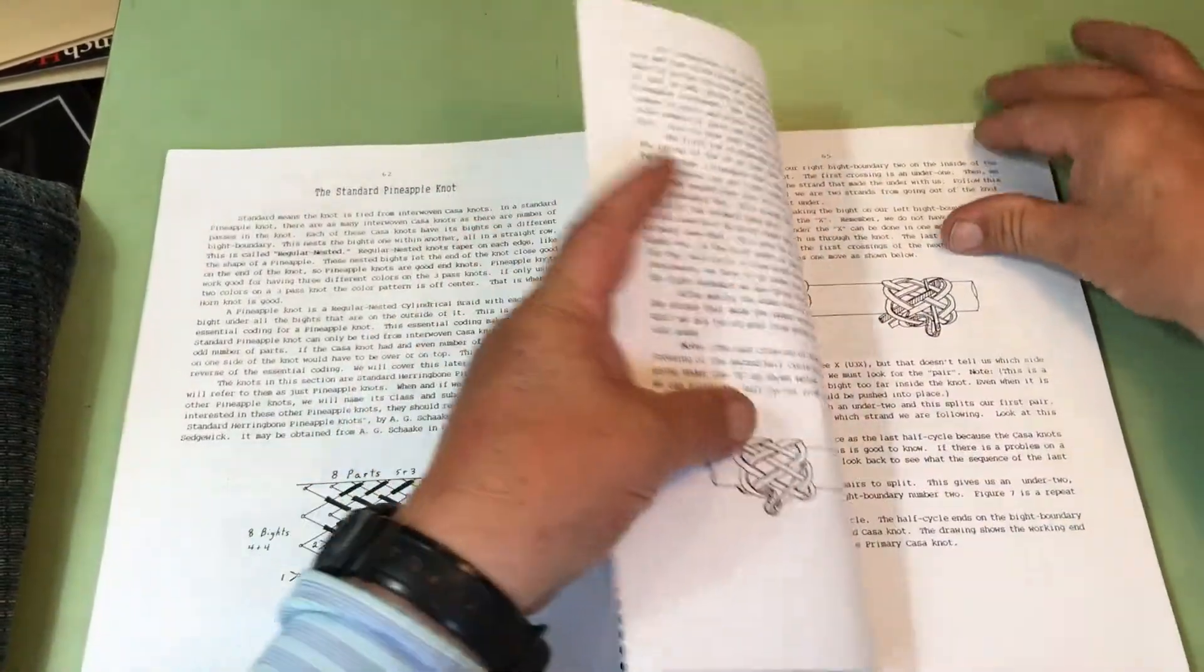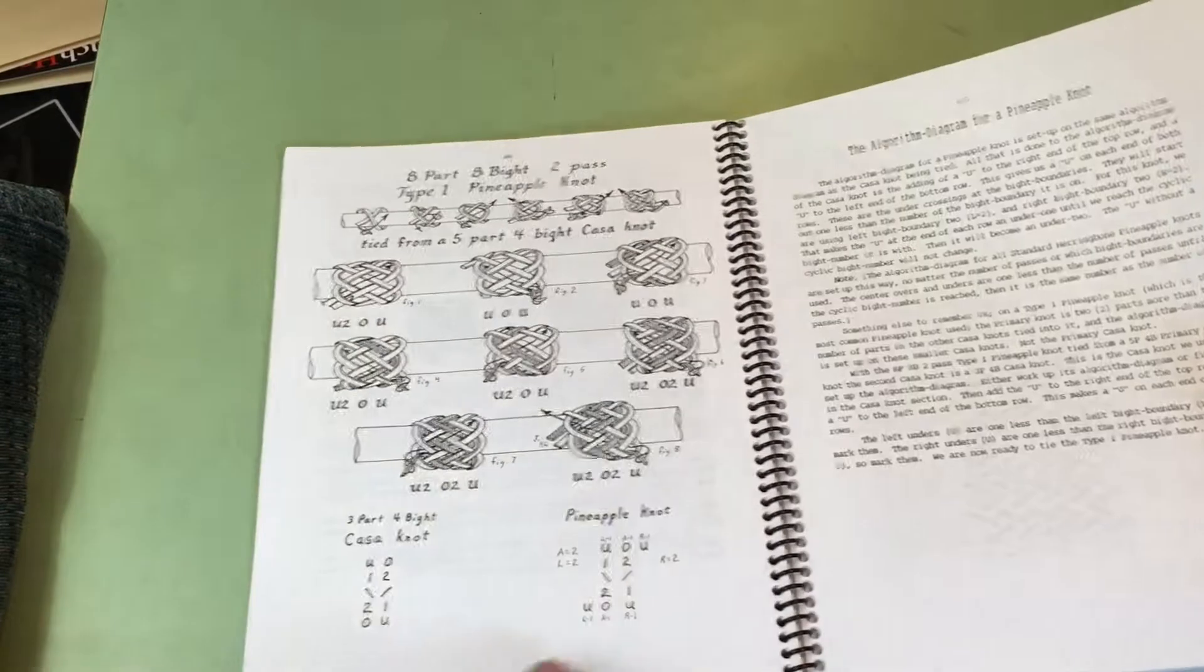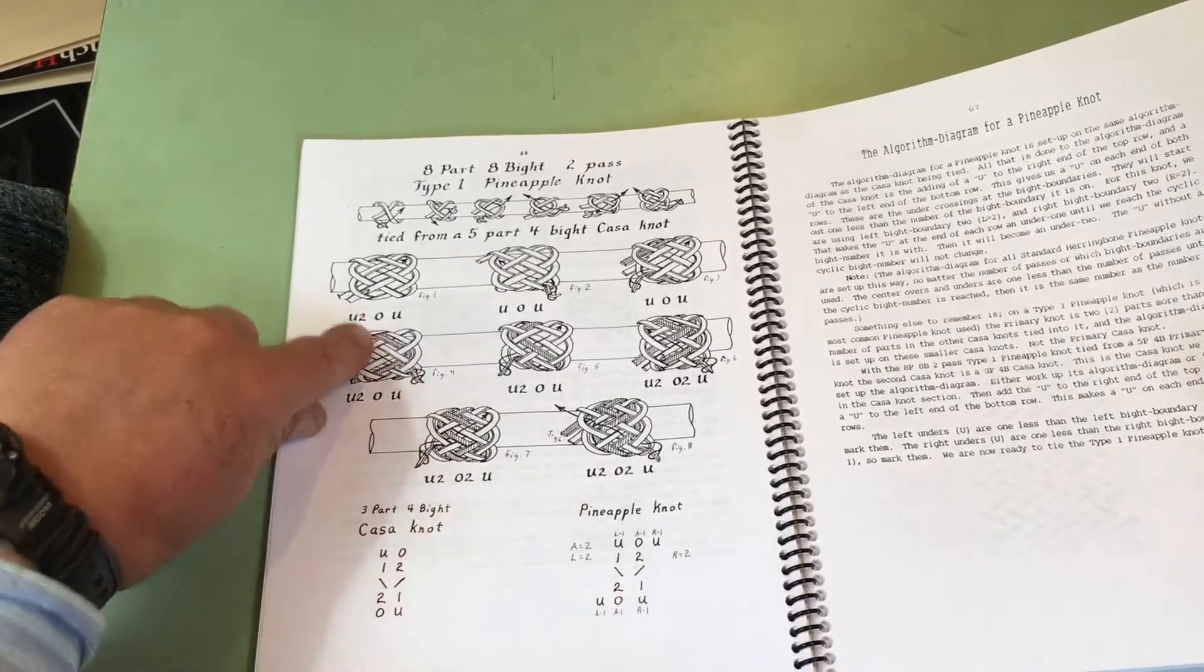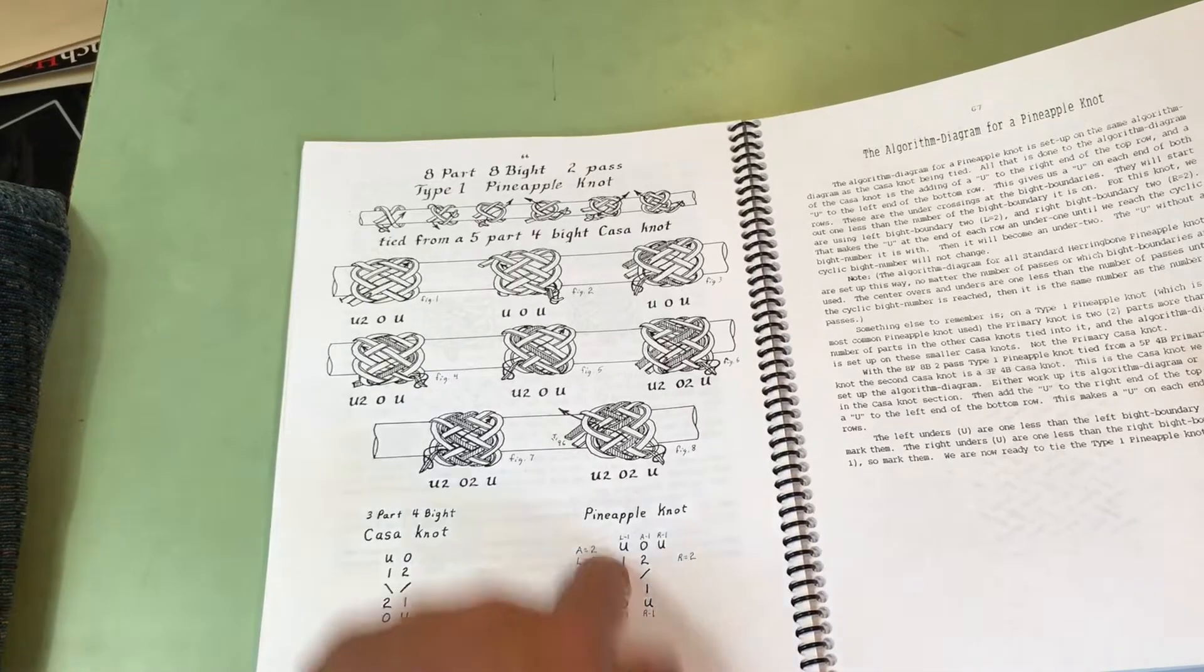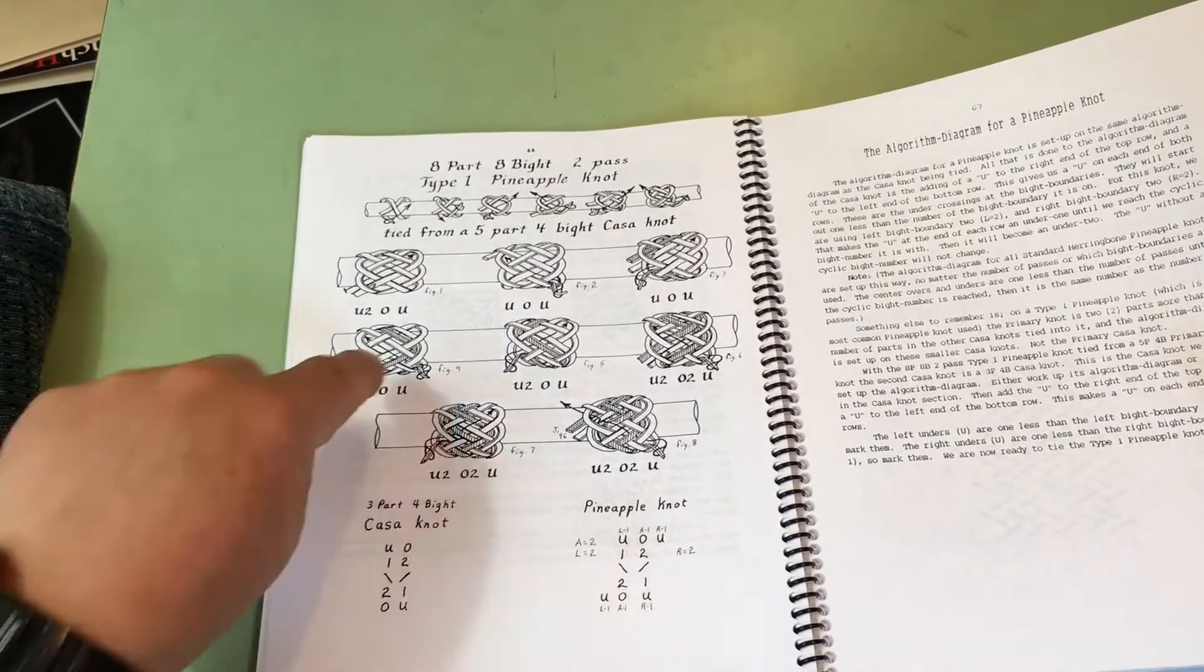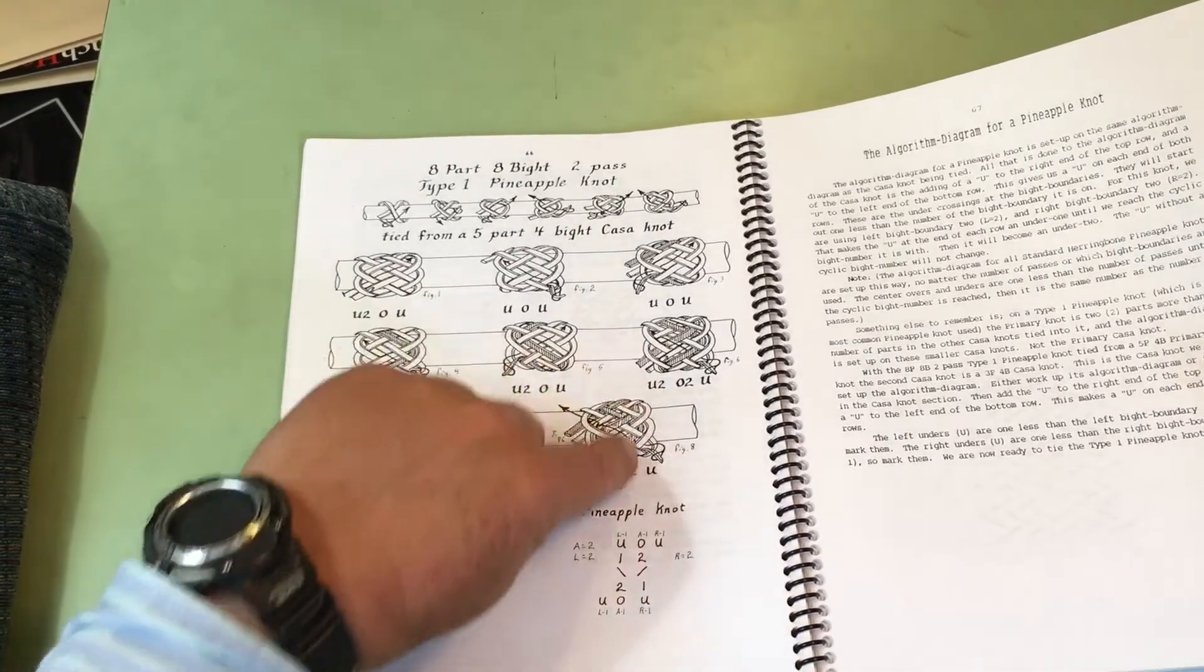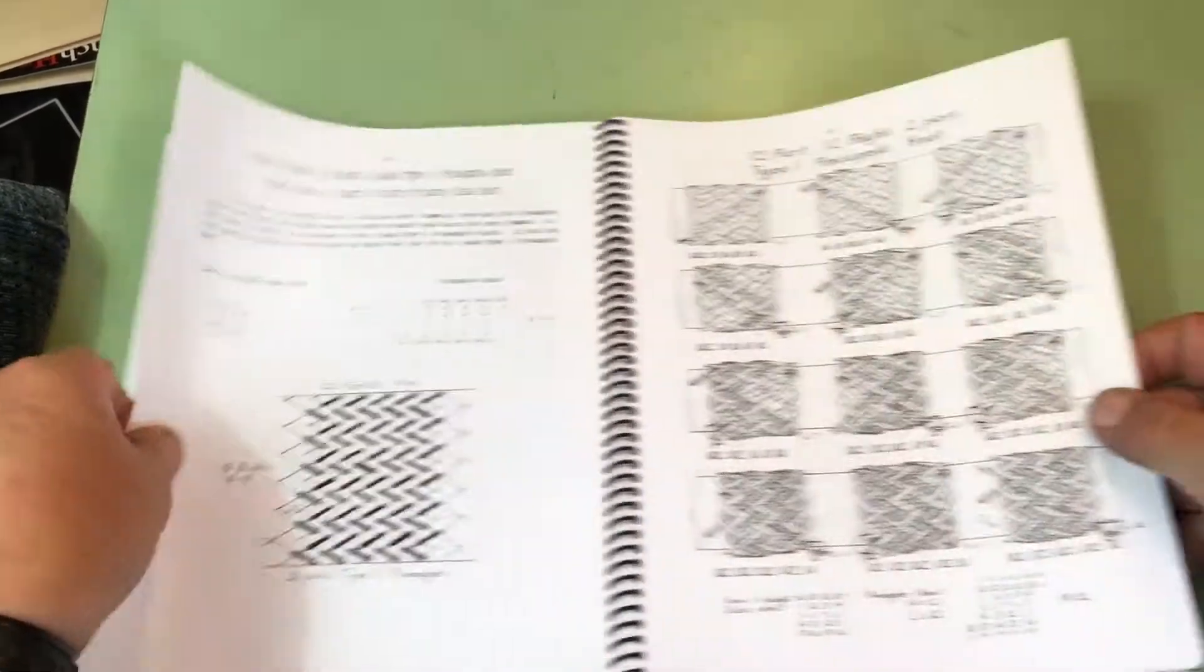Okay, now we're to the pineapples. On the pineapple, this is how you set up. And now, you need to know what bight boundary they're on. So, the A is still the number of passes. The L is the left bight boundary of the knot you're tying. And R is the right bight boundary of the knot that you are tying. And that's how you set that up.